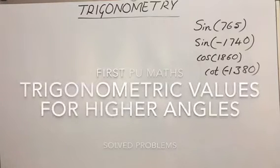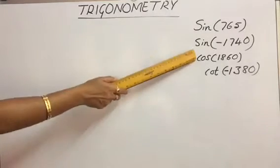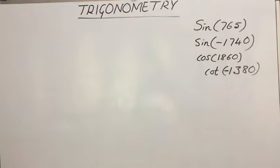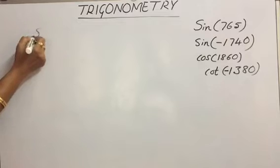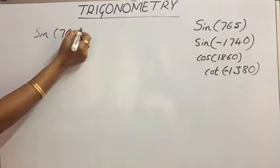Hi everyone. To remember, in the last video we studied some trigonometric values of sine, cos and tan related to 0°, 30°, 45°, 60° and 90°. Today let's consider some more values with sine, cos, tan, cot etc. with higher angles. So let's consider sine of 765°.